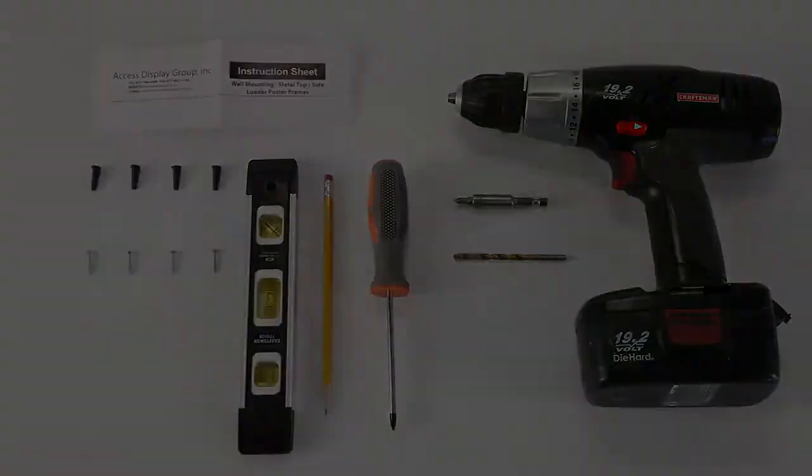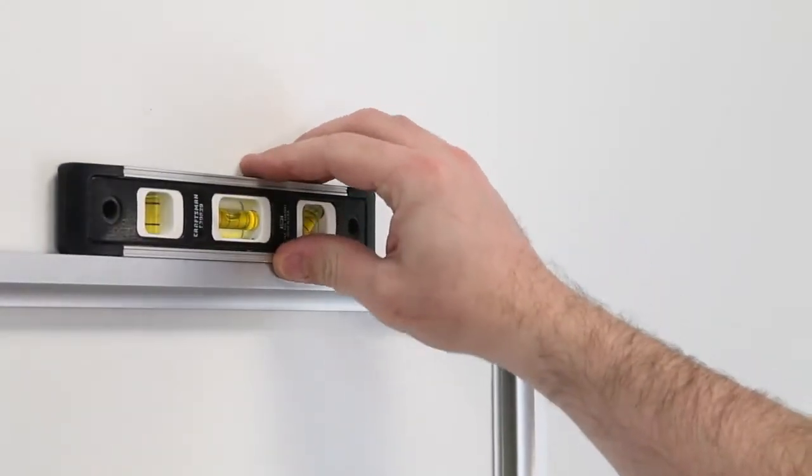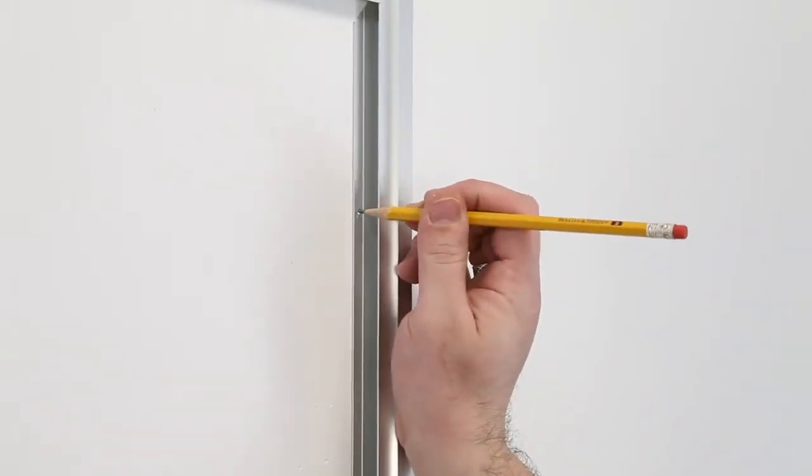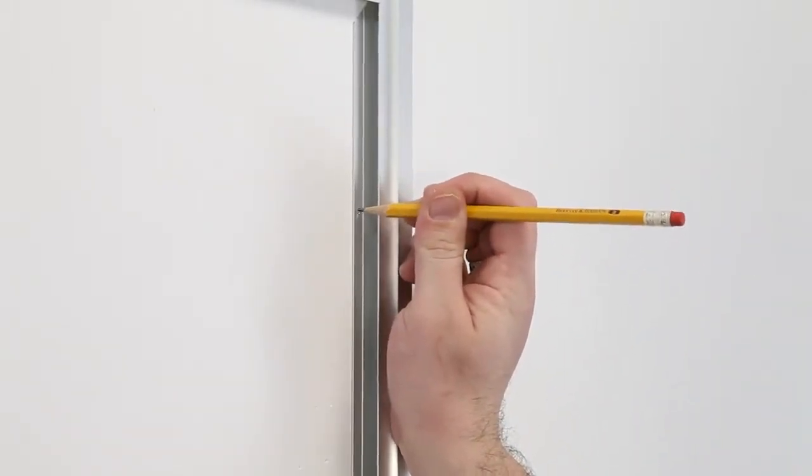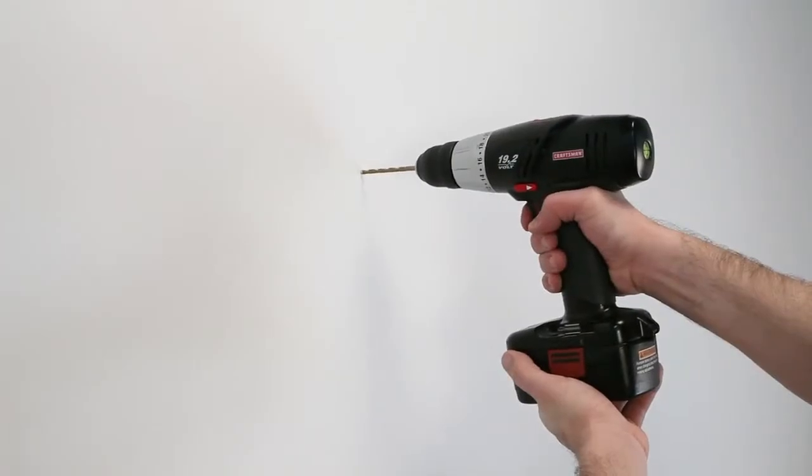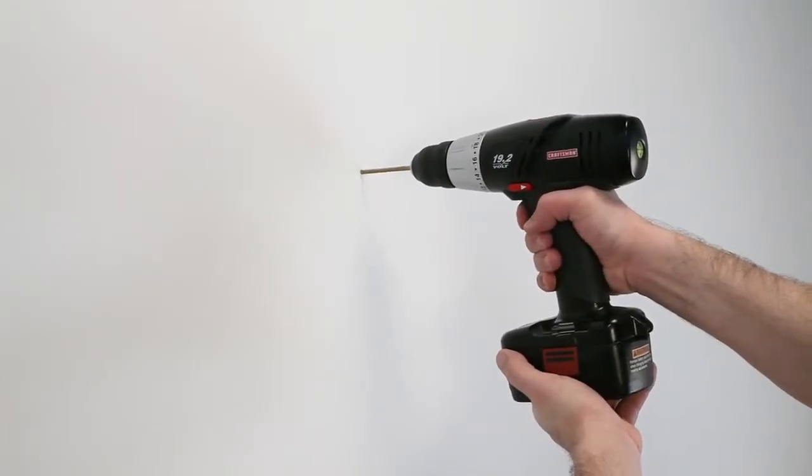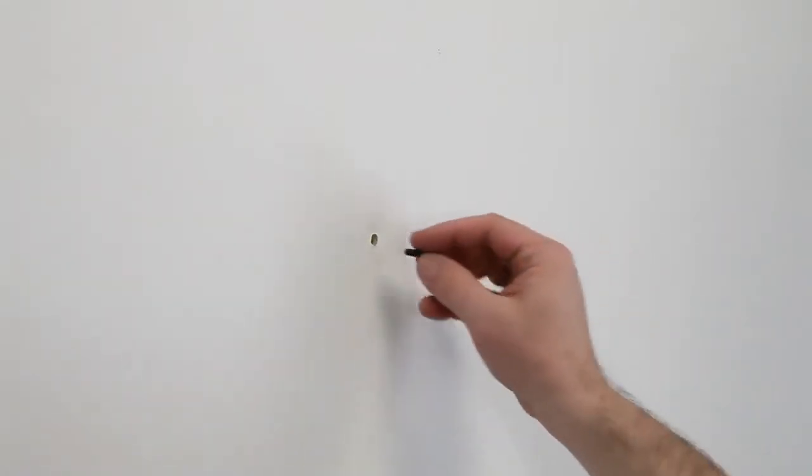When you're ready, use the level to line up the frame. Once level, use the pencil to mark the four holes where the wall anchors and screws will be inserted. Use the hand drill and drill on the pencil marks. Once the holes have been made, insert the wall anchors.